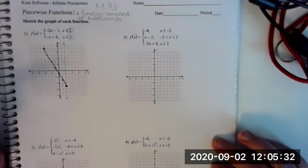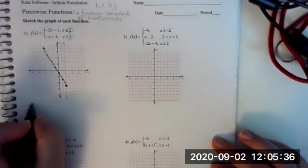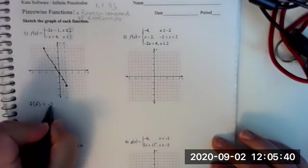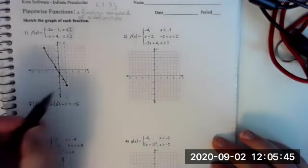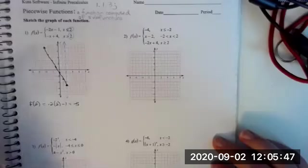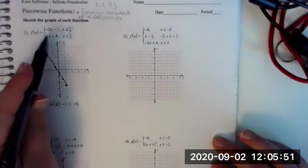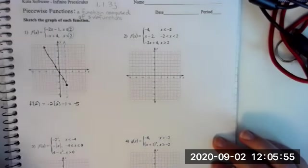Another way to do it: if you substitute 2 into the function, it's negative 2 times 2 minus 1, which equals negative 5. So you have a point at (2, negative 5), and then you can work backwards from the slope. If the slope is negative 2, you can go up 2 left 1, up 2 left 1.